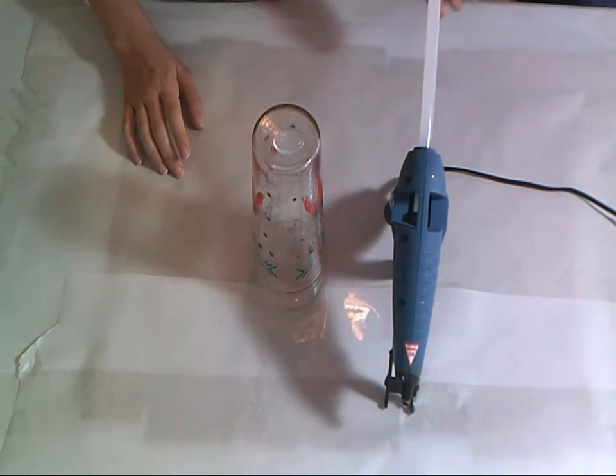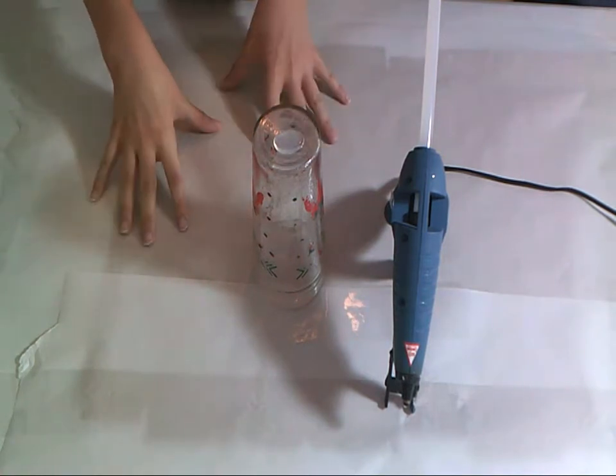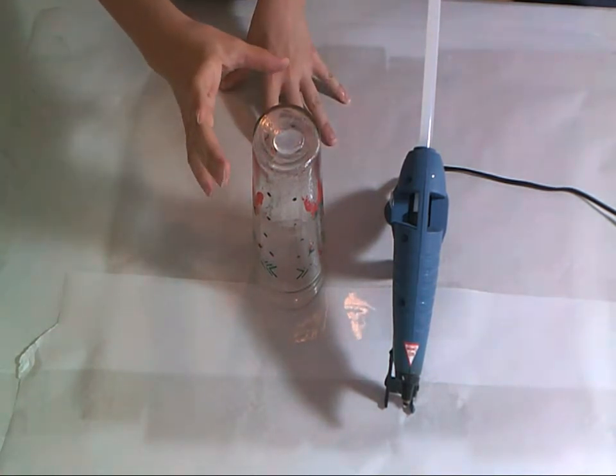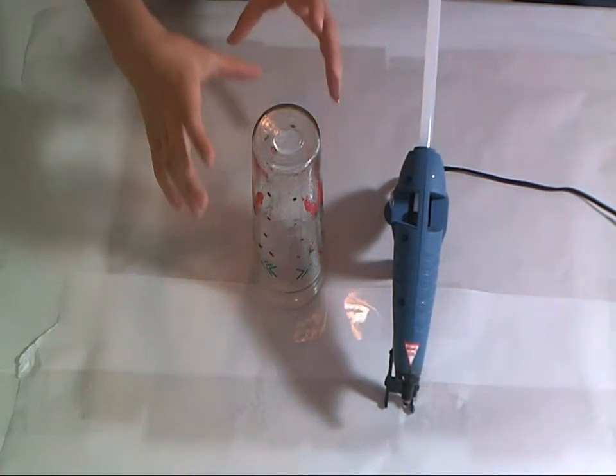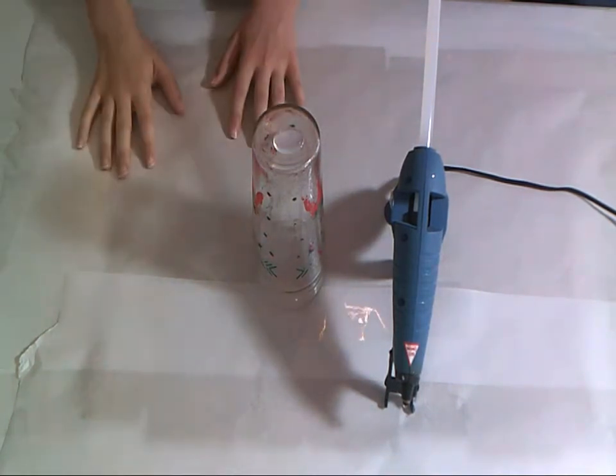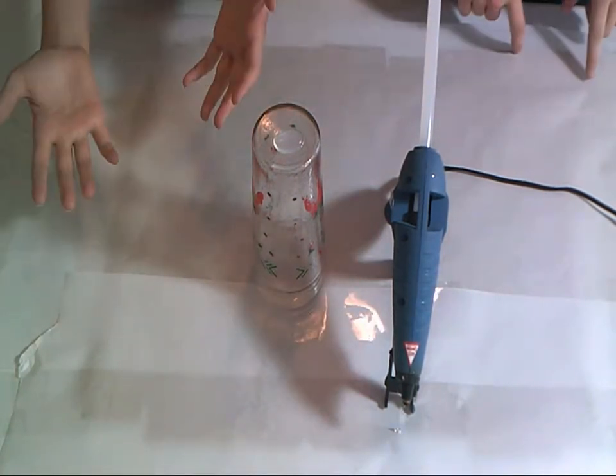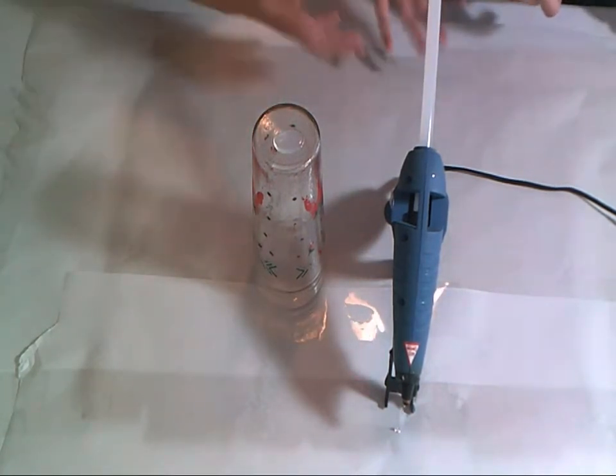So what you'll need is of course a glue gun, some glue sticks, a cup, parchment paper, and you would want to put some cooking spray on the cup, or Vaseline, and a cardboard to put under the parchment paper so you don't ruin anything. Paint, and that's it.